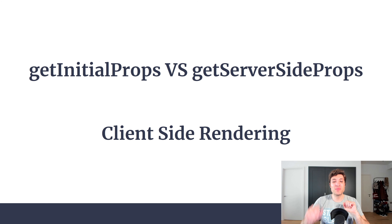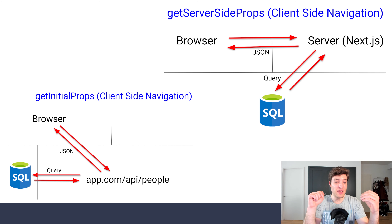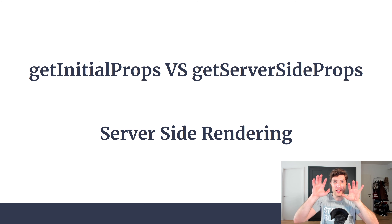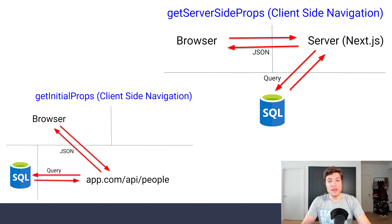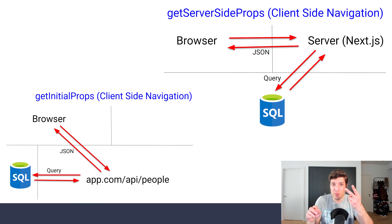Looking at the diagrams side by side for client-side navigation: on the left we have GetInitialProps, on the right GetServerSideProps. With GetInitialProps we need that API endpoint; with GetServerSideProps we don't. On GetInitialProps you go browser → API → SQL database — two jumps. On GetServerSideProps you go browser → Next.js server → database — also two jumps, but without needing a separate API.